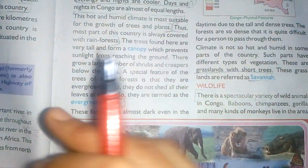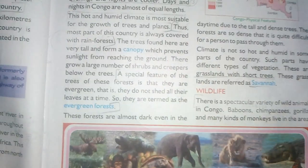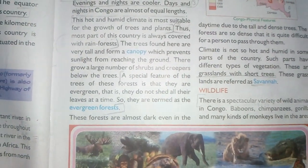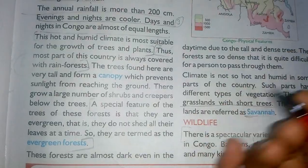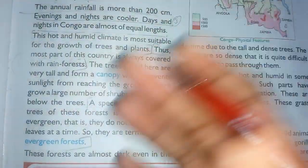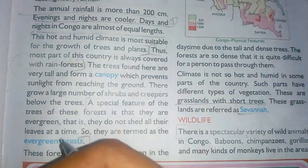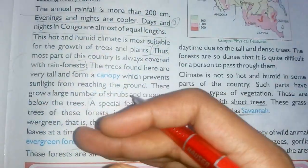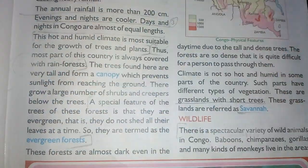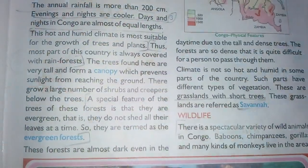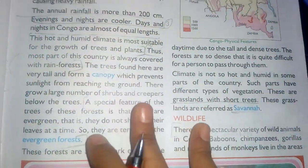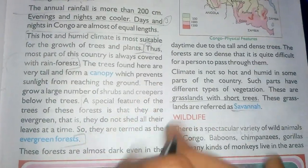Evergreen forests are almost dark even in the daytime, due to the tall and dense trees grown very closely together. That is why the forests are dark even during the day, and it is very difficult for a person to pass through them.